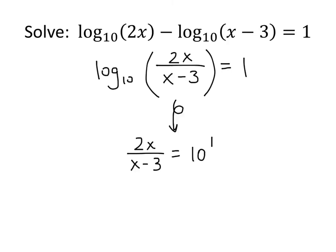And now we've got an equation that doesn't have any logs left in it. Now we just use our normal techniques. So I'm going to multiply both sides by x minus 3. When I do that on the left-hand side, the x minus 3s divide out, and I just get 2x. On the right-hand side, I get 10 times the quantity x minus 3. That gives me 10x minus 30.